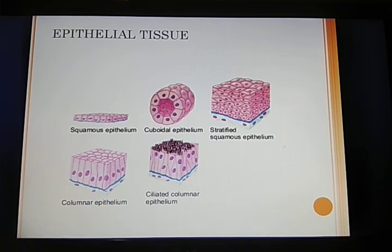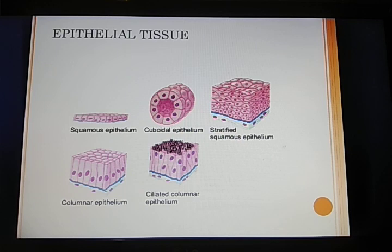We will go to stratified squamous epithelium, which is just like squamous epithelium but has column-like cells, and it is normally found in the inner lining of the mouth cavity. Columnar epithelium has vertically arranged cells, and this tissue's basic function is for secretion. It is found in the inner lining of the stomach and intestine.